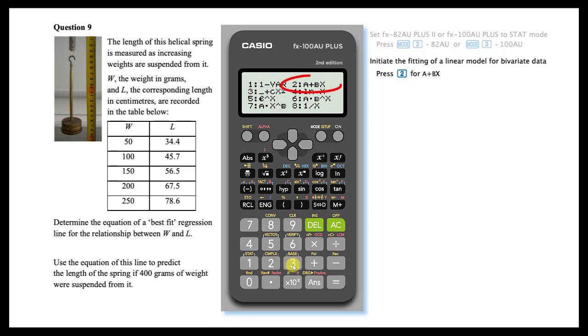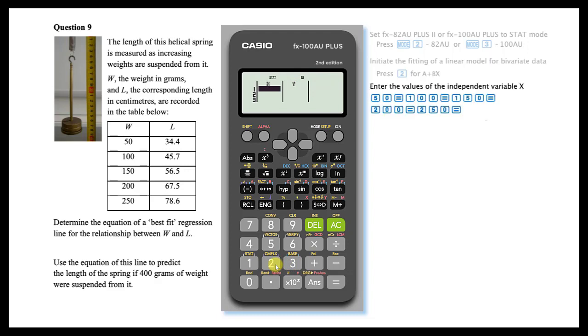For a linear regression model, select option 2. Enter the values of the independent variable with each entry followed by equals.